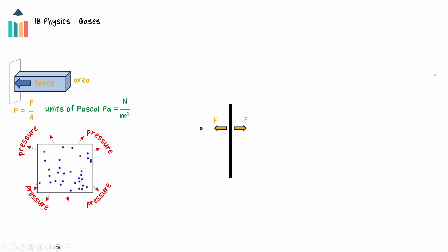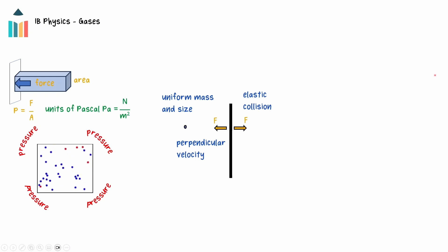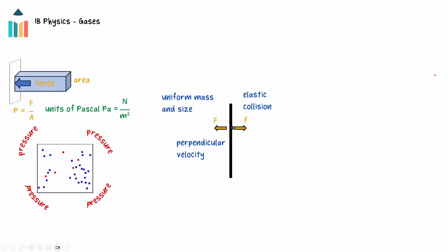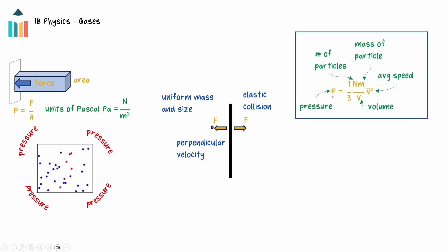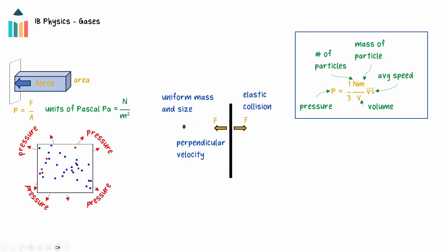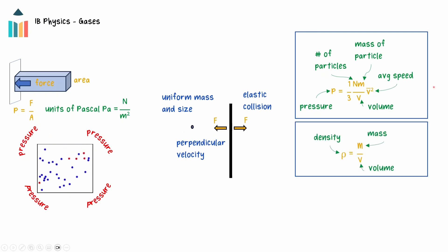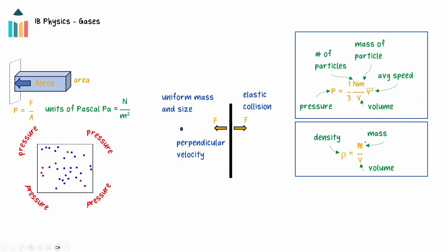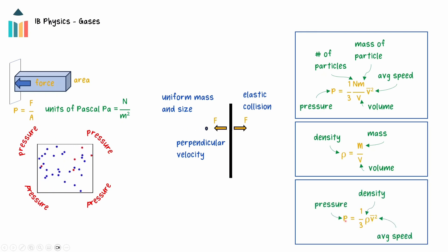Applying the conditions for an ideal gas — elastic collisions, uniform particle mass and size — and using the components of particle velocities perpendicular to the container wall, the relationship between pressure, volume, and average velocity can be derived. Pressure will be higher with more particles or more massive gas particles, and lower if the gas occupies more volume, but it increases with the square of the particle speed. Using the fact that density is the ratio of mass to volume, the equation simplifies to: pressure equals one-third times the density times the average speed squared.